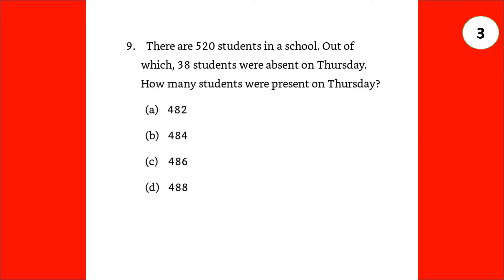There are 520 students in a school, out of which 38 students were absent on Thursday. How many students were present on Thursday? So, it's 520 minus 38. So, answer is 482.